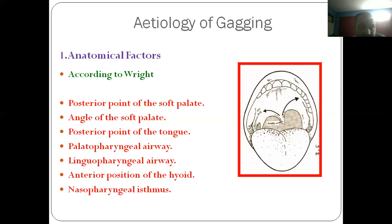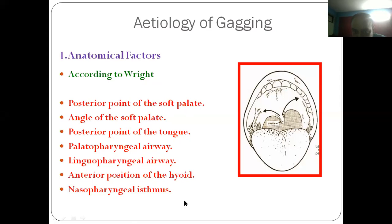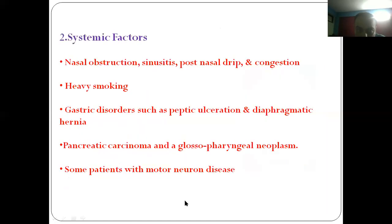These are the anatomical locations that are very prone to gagging: posterior point of the soft palate, angle of the soft palate, posterior point of the tongue, palatopharyngeal airway, linguopharyngeal airway, interior position of the hyoid, and nasopalatial isthmus. These you need to remember.